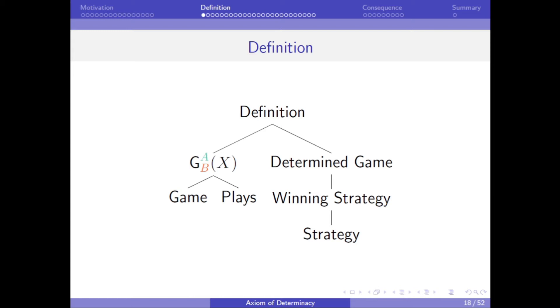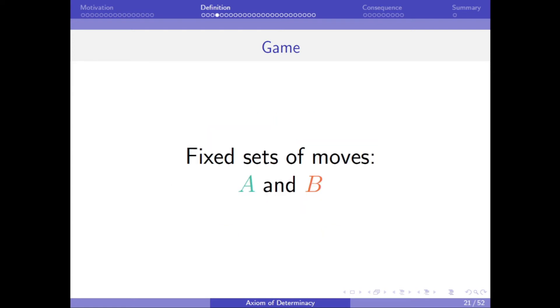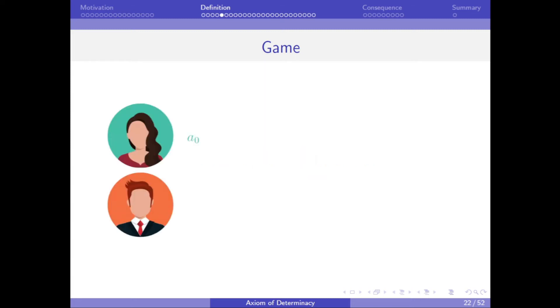But before we can discuss these regularity properties, we need to actually define the axiom of determinacy, which means we need to talk about a certain type of game. In this type of game, there are two players, who we will call Alice and Bob. And each player makes a move from a fixed set of moves. In particular, we will call the set of moves for Alice, capital A, and for Bob, capital B. In this type of game, Alice always makes the first move. Then Bob makes his move, and the players keep alternating making moves, until they have made an infinite number of moves, one for each natural number.